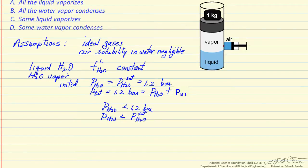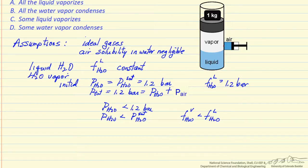This means the pressure of water is less than the saturation pressure of water. In terms of fugacities, the fugacity of water in the vapor phase is less than the fugacity of water in the liquid phase, because we did not change the fugacity of water in the liquid phase. The fugacity of water in the liquid phase is going to be about the same as its saturation pressure, 1.2 bar. We have a difference in fugacity, and fugacity — or chemical potential — is a driving force for mass transfer, so liquid water is going to go into the vapor phase to try and get back to equilibrium.